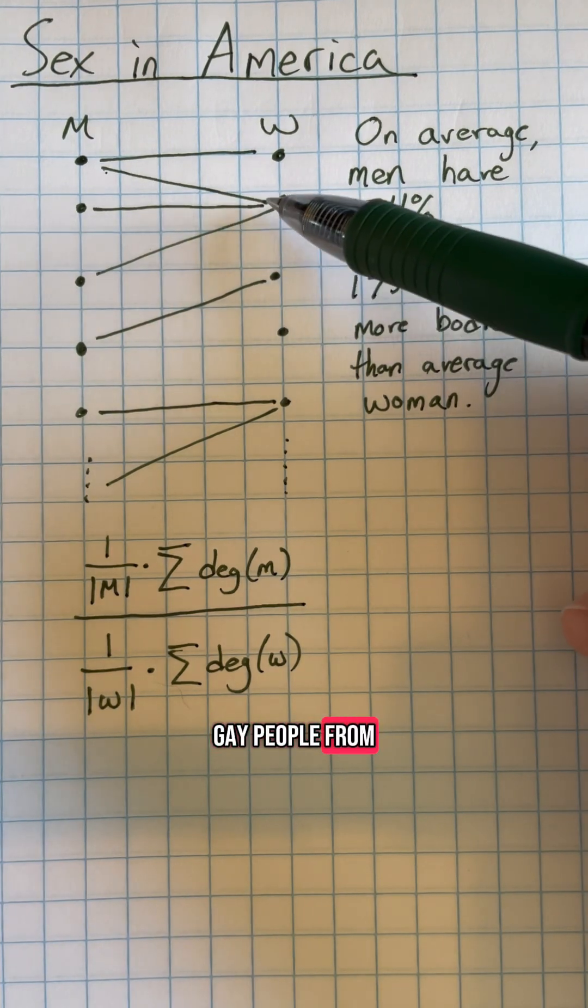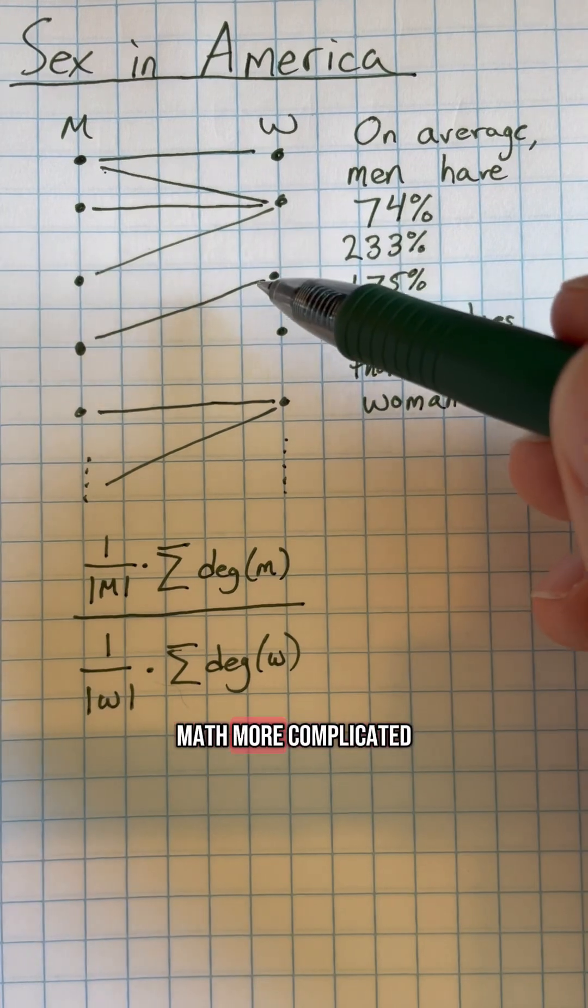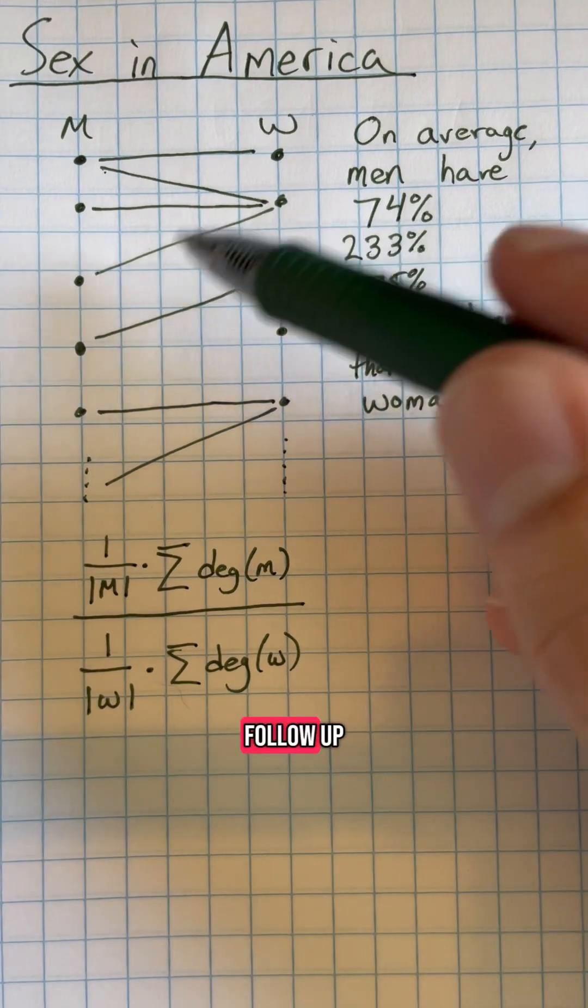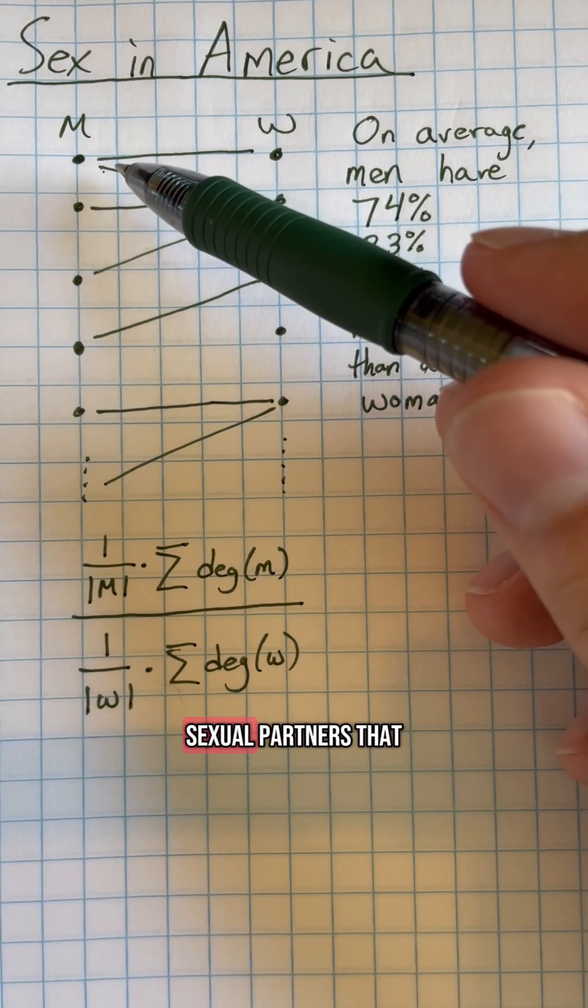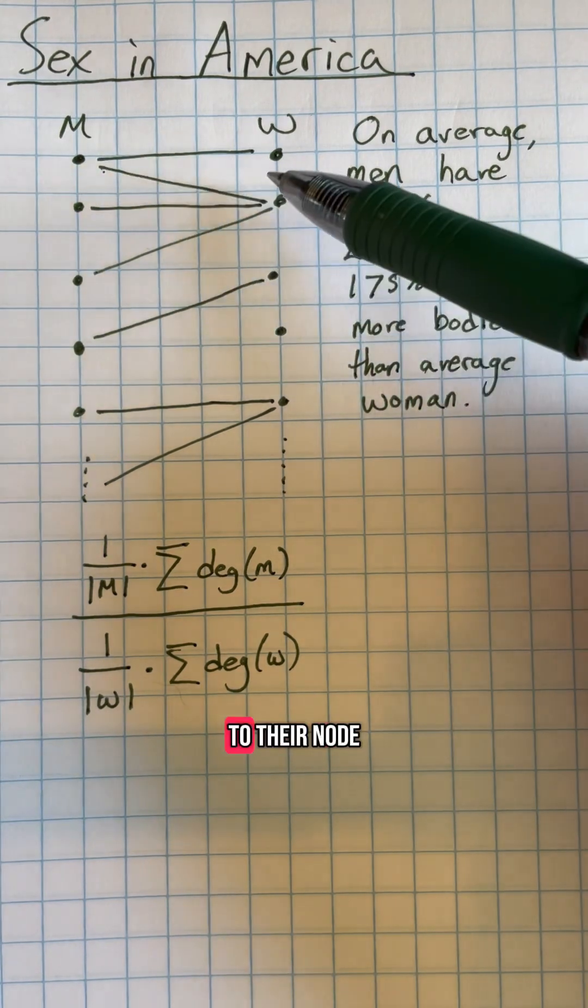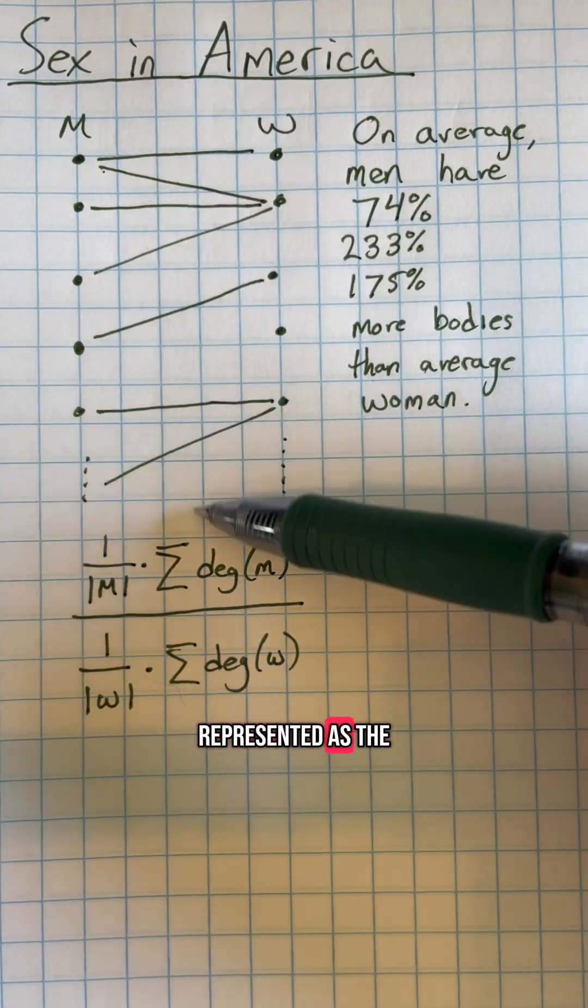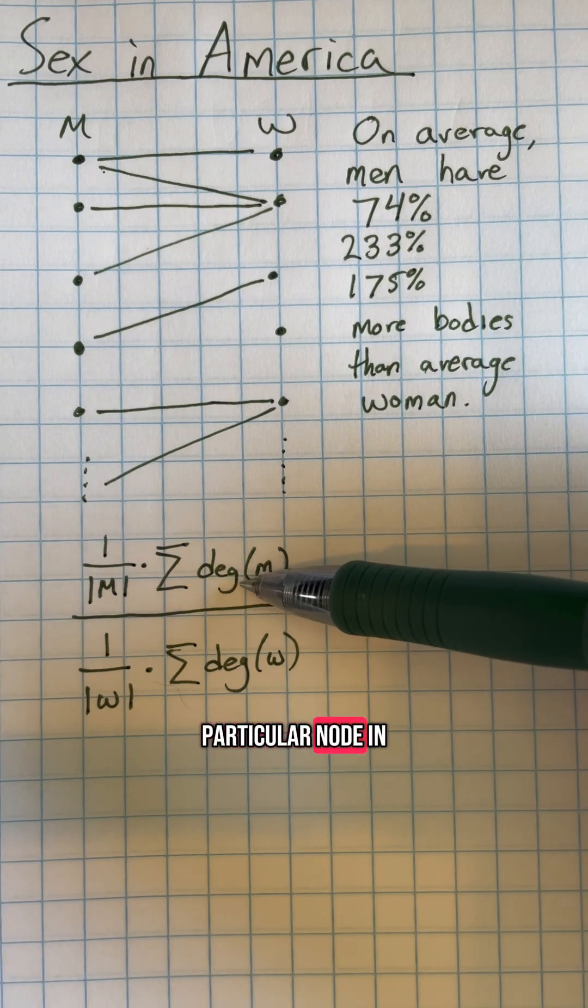Now, this excludes gay people from the equation. However, that makes the math more complicated and is better suited for a follow-up video. The number of sexual partners a person has is simply the number of connections to their node, which is represented as the degree of that node in the graph.